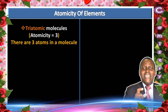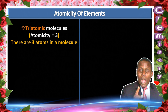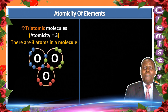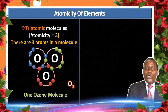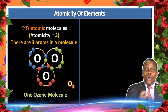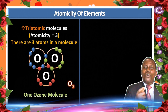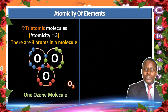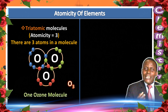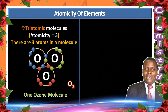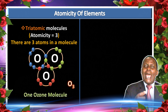A molecule containing three atoms is referred to as triatomic. An example of a triatomic molecule is ozone — one molecule of ozone contains three atoms of oxygen. Therefore that molecule is triatomic.